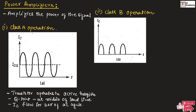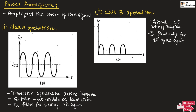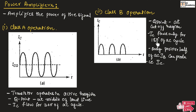Now let us see class B operation. This is the output current for class B operation of a power amplifier. In class B operation, the Q point will be at the cutoff region. If the Q point is at the cutoff region, the collector current flows only for 180 degrees of the input cycle, which means only the positive half of the base current can produce the collector current at the output.